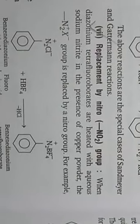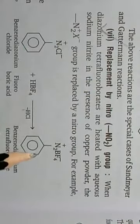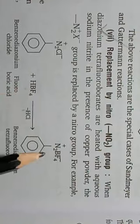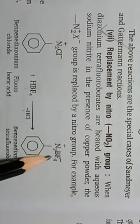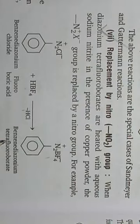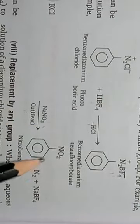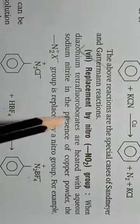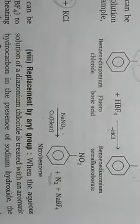The next reaction is replacement by a nitro group. In this reaction, the diazonium salt is first treated with fluoroboric acid to form the diazonium tetrafluoroborate. This is then treated with sodium nitrite in the presence of copper, yielding nitrobenzene as the main product and nitrogen as a byproduct. In this way, the diazonium chloride group is displaced by a nitro group.